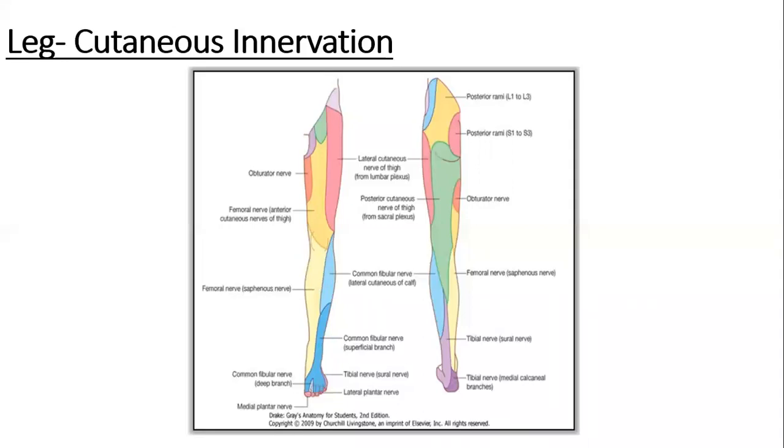Third very important nerve providing cutaneous innervation to the leg is saphenous nerve. Saphenous nerve arises from the femoral nerve as a branch of femoral nerve. Its course in the leg is that it descends along the tibial side of the leg.